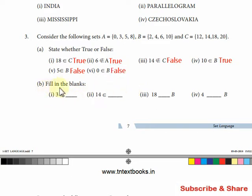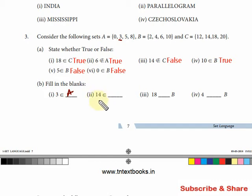Next question is B — fill in the blanks. Looking at the dash number: 3 blanks 2 — so where is 3? 14 blanks 2 — where is 14? Then 14 blanks 2, C. Add 8 dash B — so 18 dash B. So where is 18 in B?